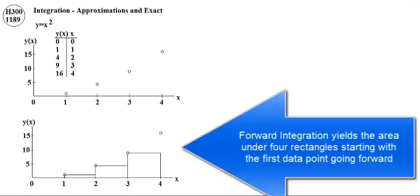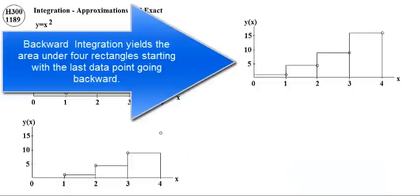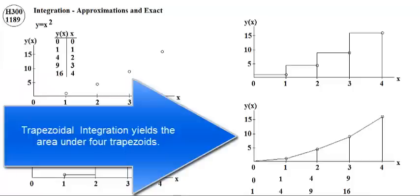Forward integration yields the area under four rectangles, starting with the first data point going forward. Backward integration yields the area under four rectangles, starting with the last data point going backward. Trapezoidal integration yields the area under four trapezoids.